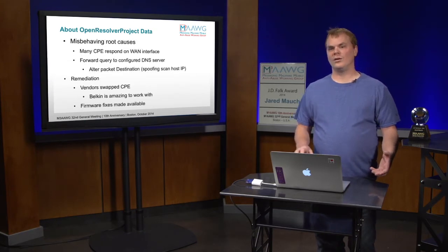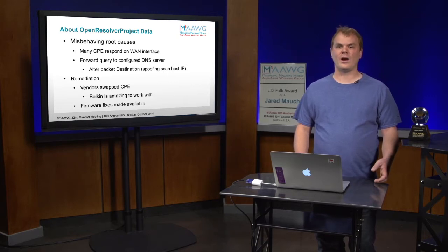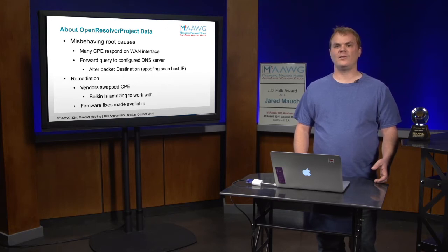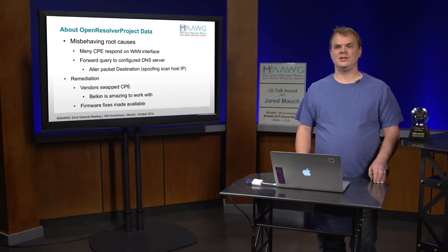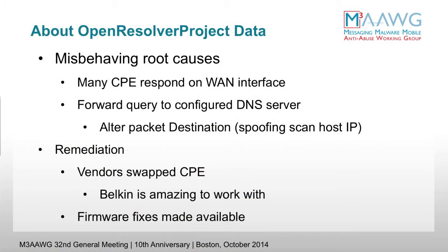We learned that many of the CPE — the home routers in people's homes — respond to the traffic that they receive on the WAN interface when they should really only be responding from the internal machines within the customer home. They'll take the DNS queries they receive, forward them to whatever their configured DNS server is, and they'll even alter the source address in the packet to rewrite it, such that the device ends up spoofing the IP address of the scanning machine to the name server that they're set to forward it to.